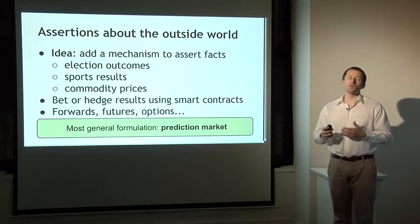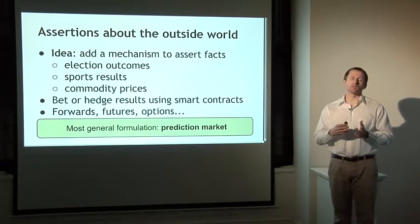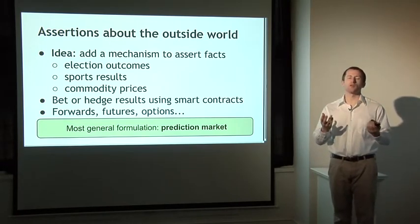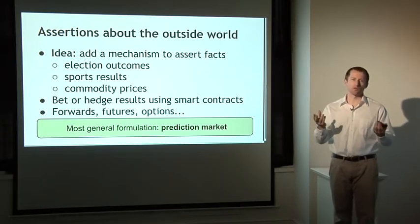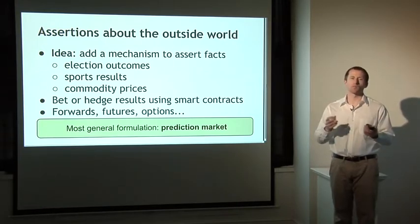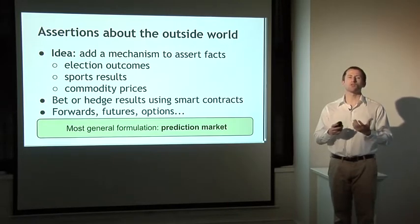So if we had those kinds of facts available on Bitcoin — say there was some script call that you could make that would just say what the current price of copper is on some common exchange — you could start doing all sorts of cool things with smart contracts.